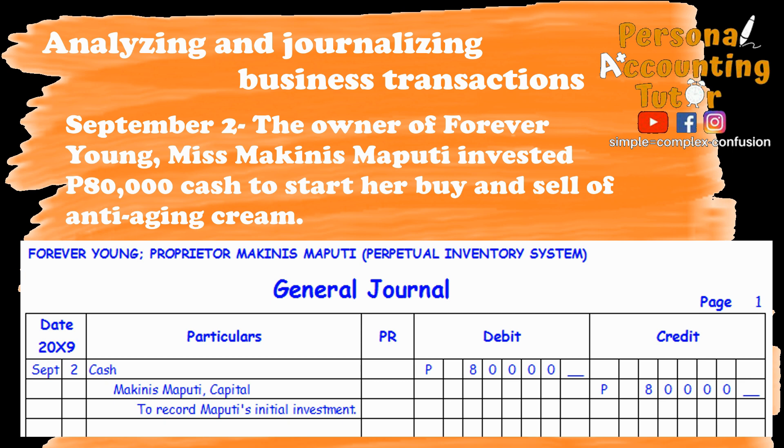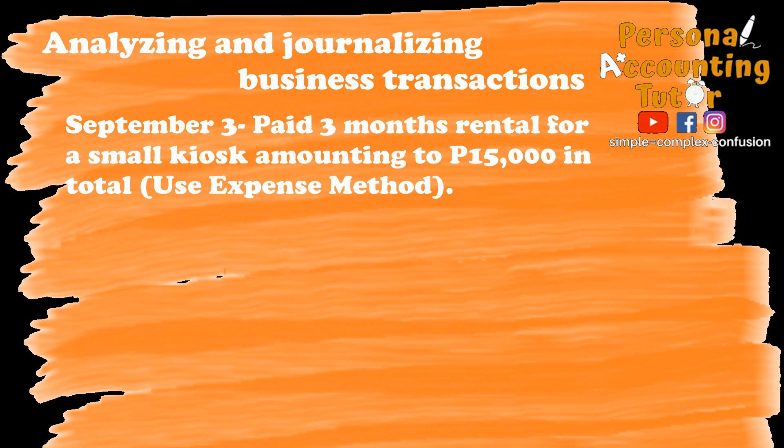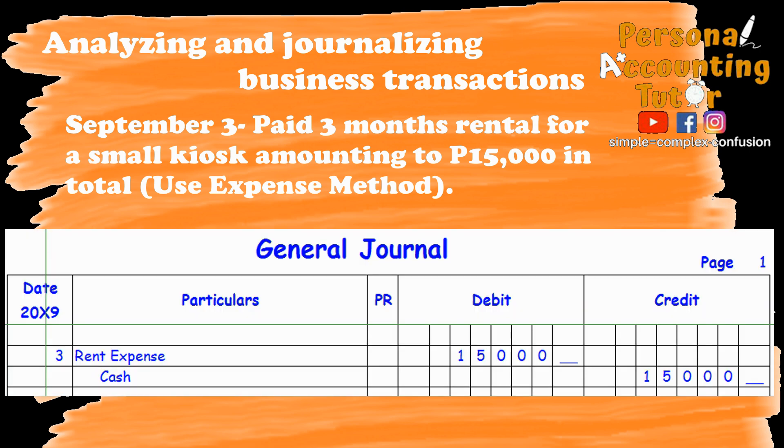The reason why you debit cash is because there's an increase in cash due to that investment. And that investment also increases the capital account of Makinis Maputi. So always remember that when there's an investment, it's always an increase in asset accounts and a credit to capital. For this one, we have the assets and capital accounts only. The next transaction is September 3: paid 3 months rental for a small kiosk amounting to 15,000 in total. We will use the expense method. The journal entry will be a debit to rent expense 15,000 and a credit to cash 15,000.